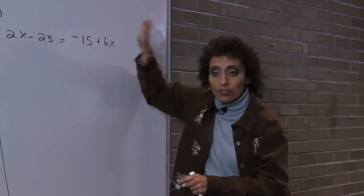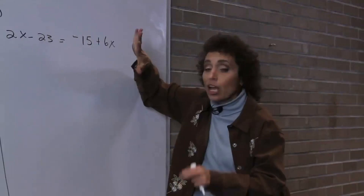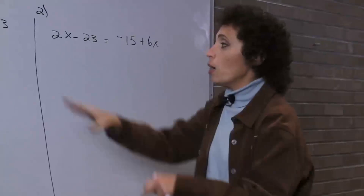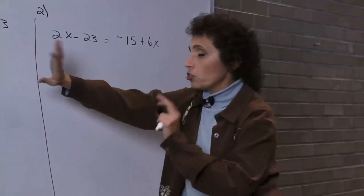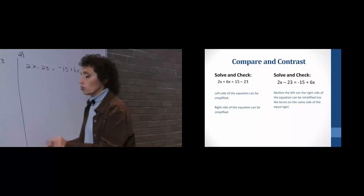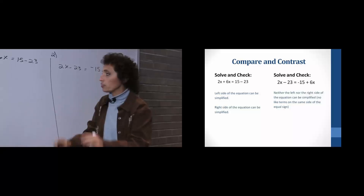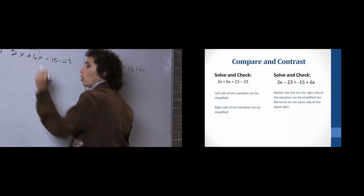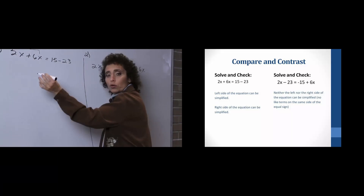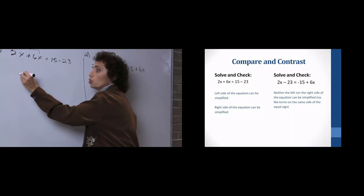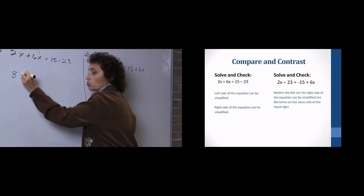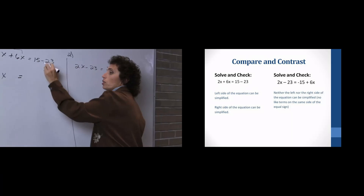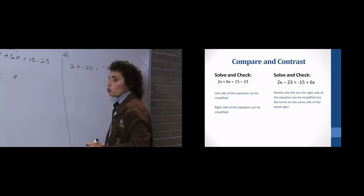We have not solved anything like this yet. But it's not a big deal. Let's go back to the first one, because we have solved this. 2x plus 6x — we try to combine on one side. So we're going to the left side. 2x plus 6x is 8x, equals 15 minus 23.